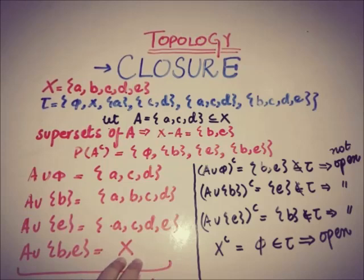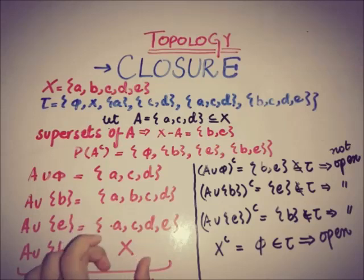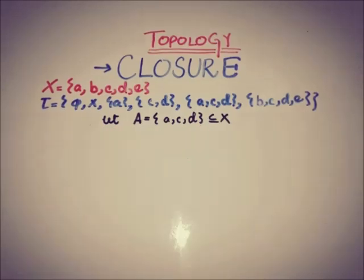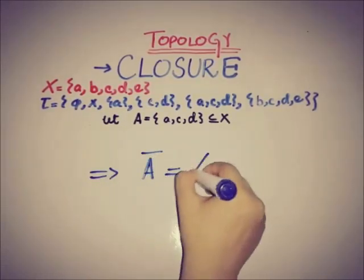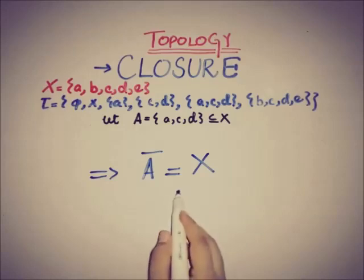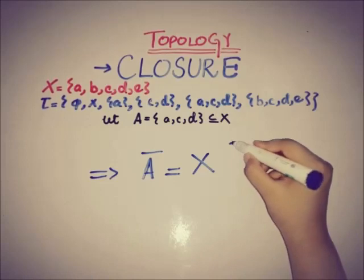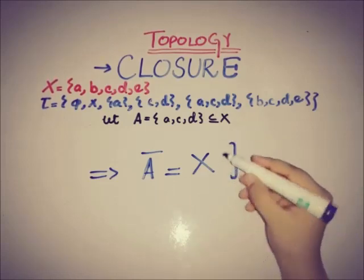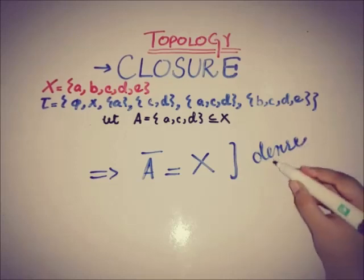The complement of X is ∅, which belongs to the topology, so X is a closed set. Since X is the only closed superset, the intersection of all closed supersets is X itself — so the closure of A equals X. This also illustrates the definition of a dense set: if the closure of A equals X, then A is called a dense set.